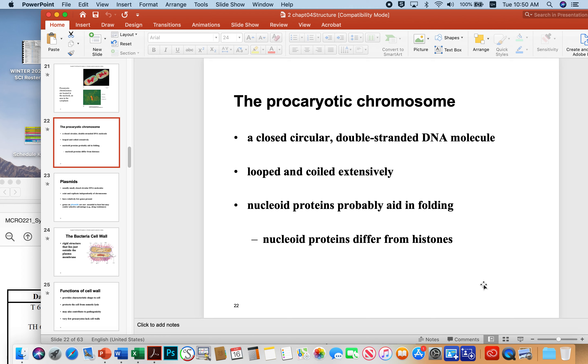Prokaryotic chromosome structure. Typically, it's a closed, circular, double-stranded DNA molecule that's looped and coiled extensively. As I mentioned previously, there's so much DNA it can't just haphazardly be packed in like a messy suitcase. There's got to be a high level of folding and organization in order for the bacterium to effectively utilize the DNA. There are definitely nucleoid proteins that probably aid in the folding, just like you and I have histones in our nuclei, but the bacterial nucleoid proteins differ chemically from the histones that we have.